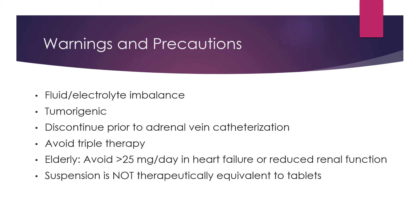Here are some warnings and precautions when taking spironolactone. Spironolactone may cause a fluid or electrolyte imbalance. It is possibly tumorigenic — in chronic toxicity animal studies it was shown to be a tumorigen, but recent studies did not suggest an increased risk of prostate or breast cancer. Spironolactone should be discontinued prior to an adrenal vein catheterization, and it should be avoided in triple therapy, which is the combined use of an ACE inhibitor, angiotensin 2 receptor blocker, and spironolactone combined. In elderly patients, avoid the use of tablets greater than 25 milligrams per day in patients with heart failure or with reduced renal function. The suspension is not therapeutically equivalent to tablets, so in patients requiring greater than 100 milligrams per dose, use tablets instead.